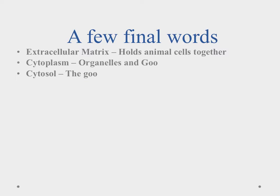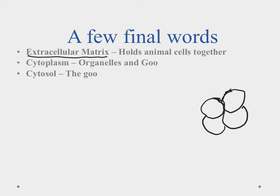A few final words here: we want to talk about the extracellular matrix, which is found in animal cells. If we draw a couple of animal cells, this extracellular matrix is the outside goo on the outside of a cell that allows them to stick together. Because of that, we can build up bigger organisms — that's what allows the cells to stick together.